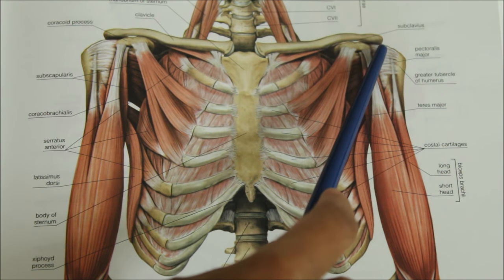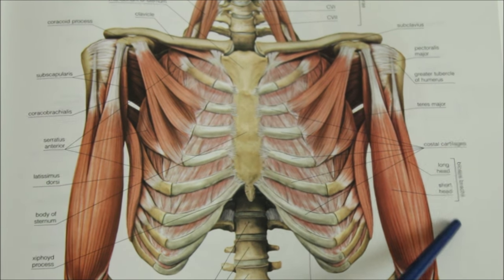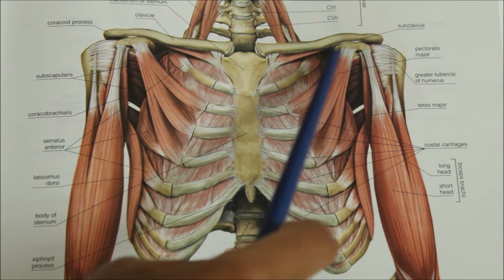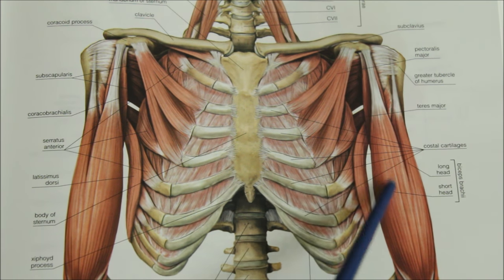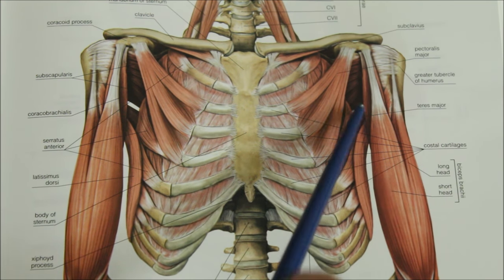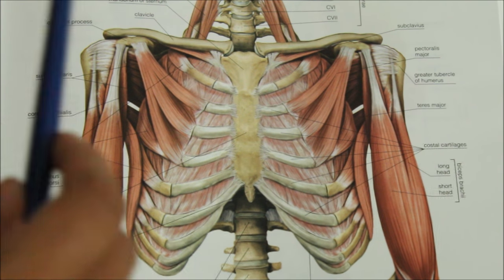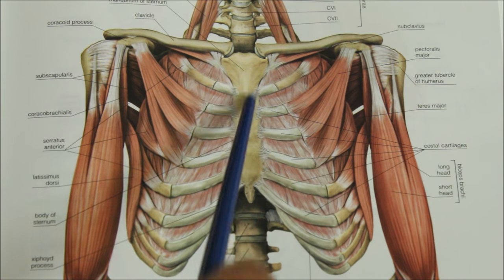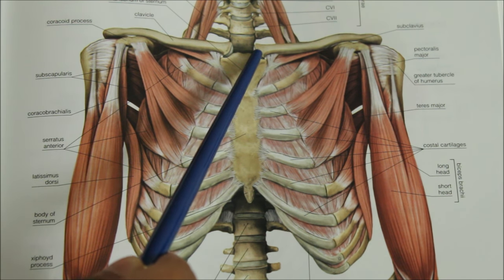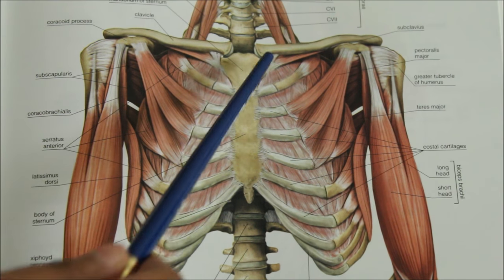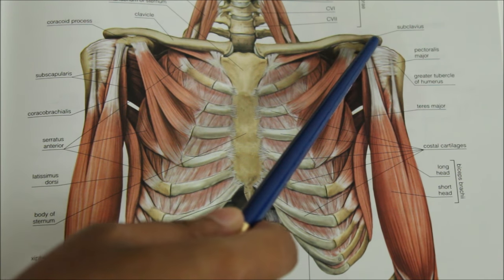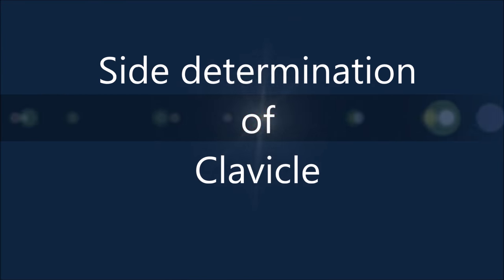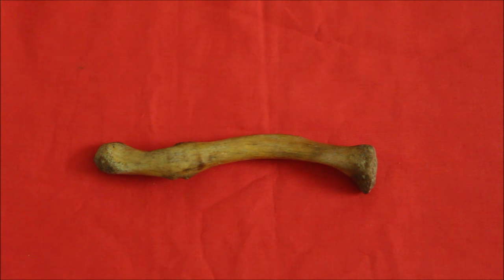The clavicle is one of the bones of the upper limb. It is also called the beauty bone. It supports the shoulder so that the arm can swing clearly away from the trunk. The clavicle transmits the weight of the upper limb to the sternum. The part near the median plane of the body is called the medial side, and the part away from the body is called the lateral side.